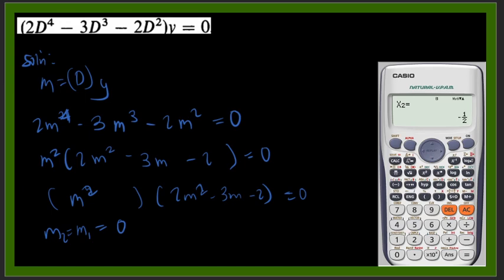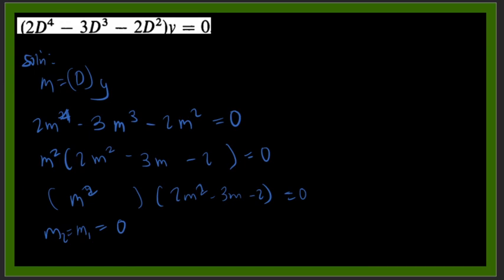So the first root is equal to 2, the second is negative 1 half. So we go back to our slide here. We just turn off our calculator first, the screen of our calculator. So we have m3 is equal to 2 and m4 is equal to negative 1 half. So we have 2 distinct roots.